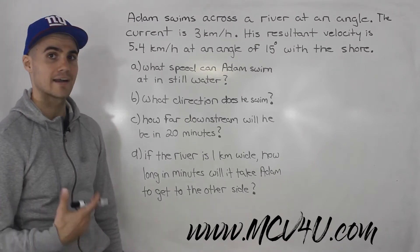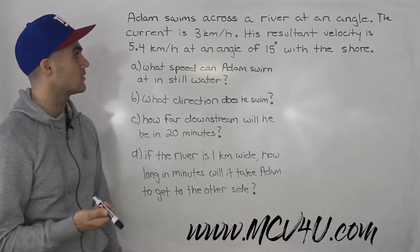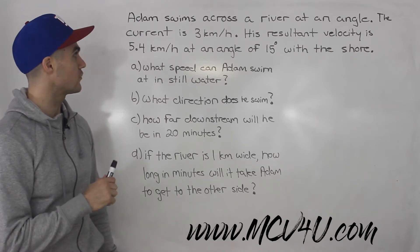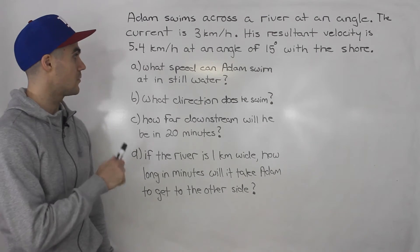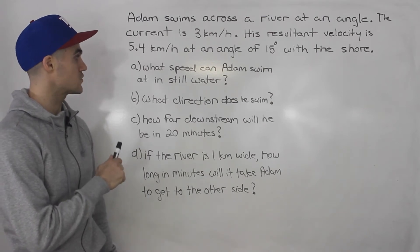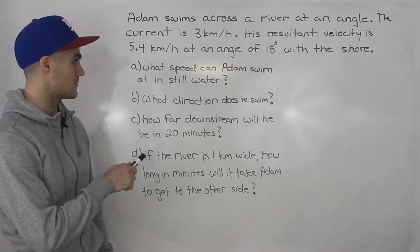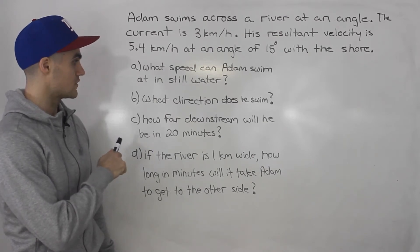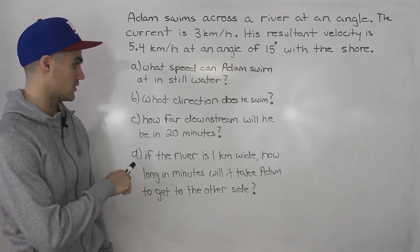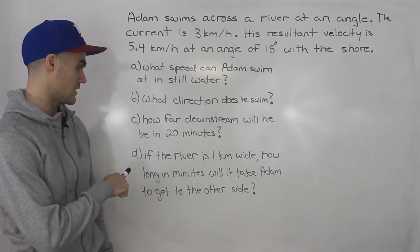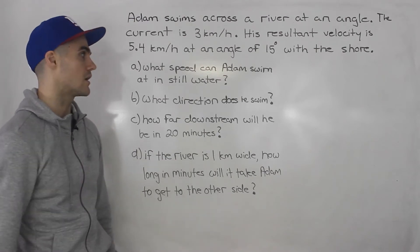Adam swims across a river at an angle. The current is 3 kilometers per hour. His resultant velocity is 5.4 kilometers per hour at an angle of 15 degrees with the shore. Part A: what speed can Adam swim at in still water? Part B: what direction does he swim? Part C: how far downstream will he be in 20 minutes? And part D: if the river is 1 kilometer wide, how long in minutes will it take Adam to get to the other side?